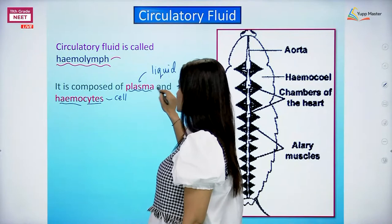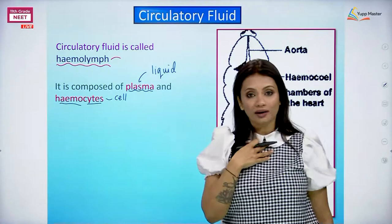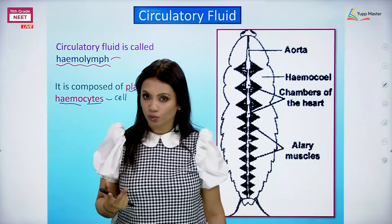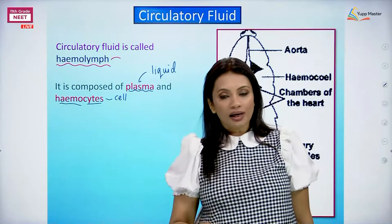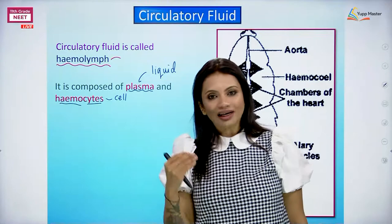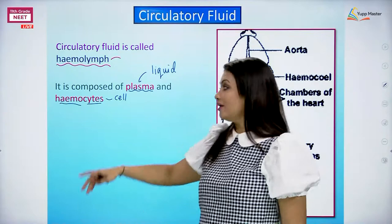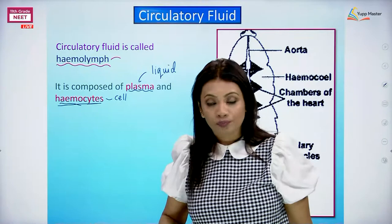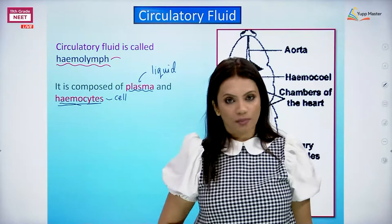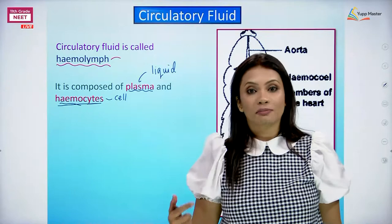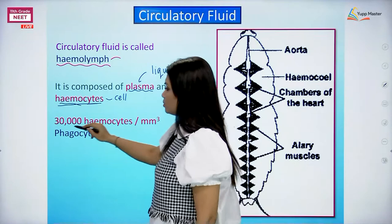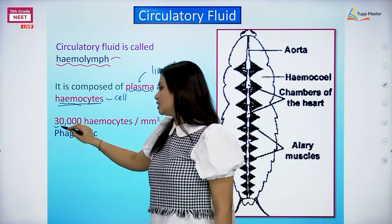When I talk about hemocytes, in our blood we have RBCs, WBCs, and platelets. In the blood of the cockroach, since blood plays no role in exchange of gases, there are no RBCs. They have cells called hemocytes. The main function of hemocytes is that they behave like WBCs - they help in defense mechanisms. There are around 30,000 hemocytes present per cubic millimeter of blood in the cockroach.